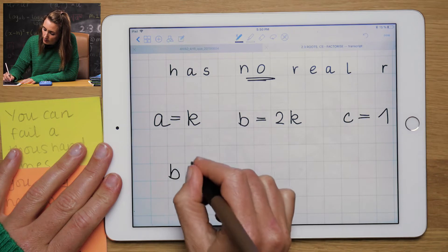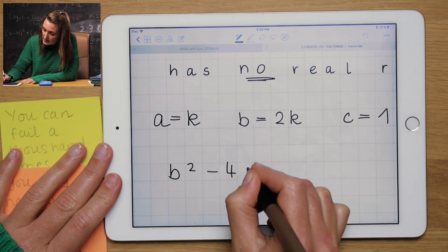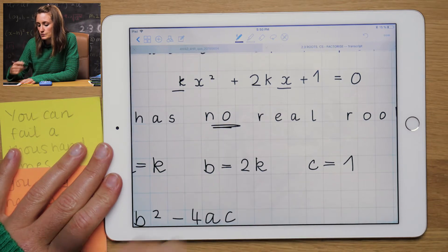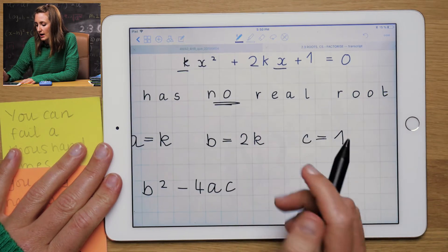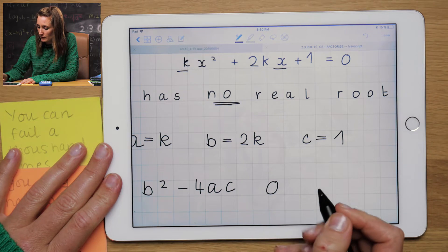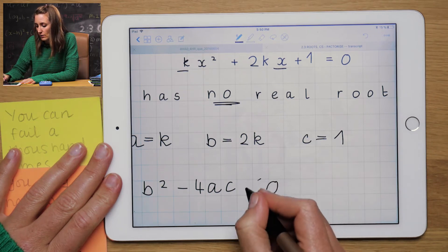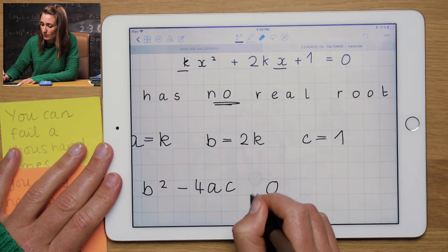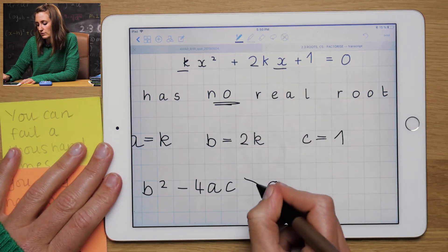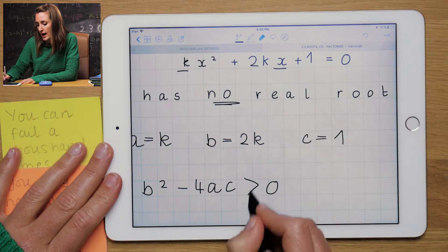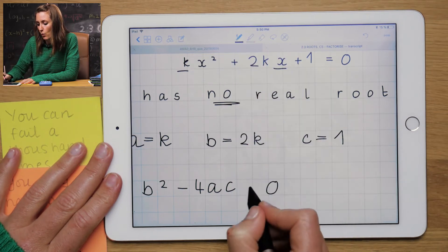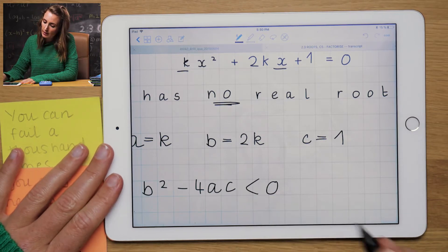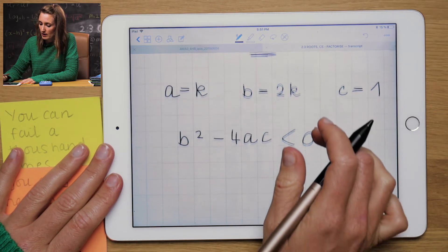You're always going to use the discriminant, b squared minus 4ac. However, depending on if it says no real roots, real roots, the sign is going to be different. So for no real roots, we're going to want less than 0. For real roots, for example, two real roots, bigger than 0. And the last key skill, we had one real root equal to 0. So there is a cheat sheet, a table in the e-book.